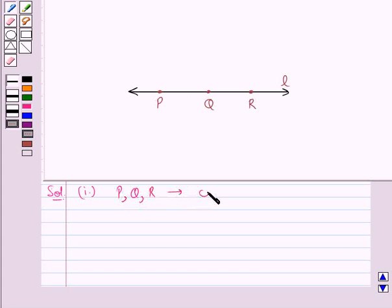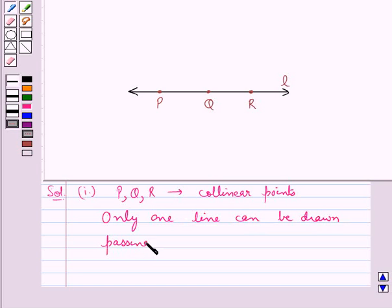we see that we can draw only one line, that is L. So we say only one line can be drawn passing through three collinear points.